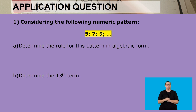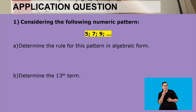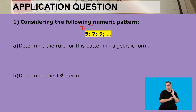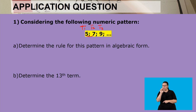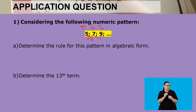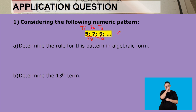We have 5, 7, and 9. We need to determine the rule for this pattern in algebraic form. To determine that rule, we need to understand how we move from the first term to the second term and from the second term to the third term. From 5 to 7 we are adding 2, and from 7 to 9 we are again adding 2, so our constant difference is 2.